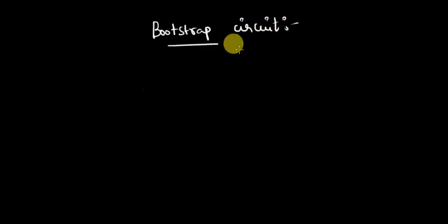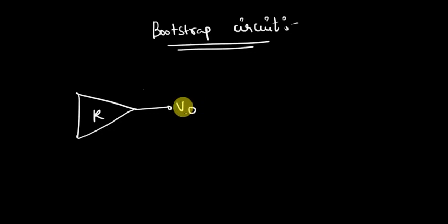So let me draw this circuit first. The circuit will look like this. Assume an amplifier of gain K. Output is connected across this and input is connected here.